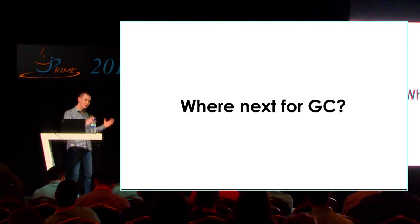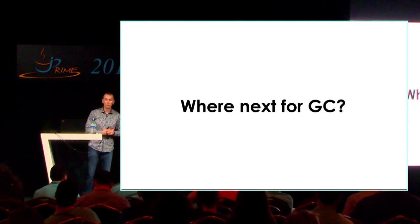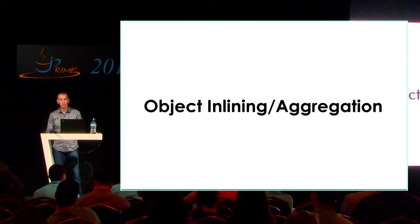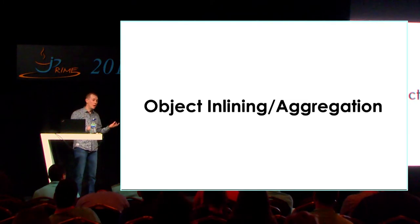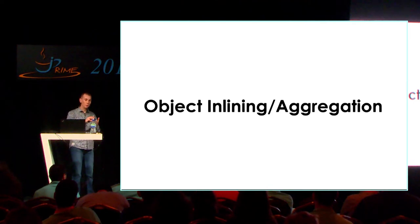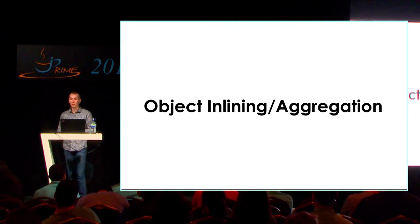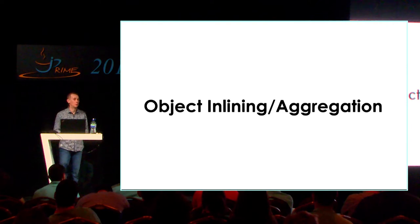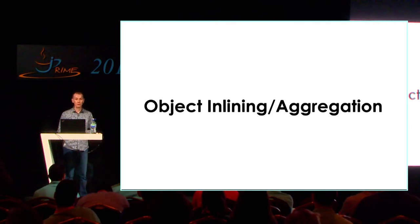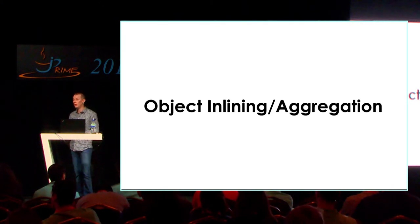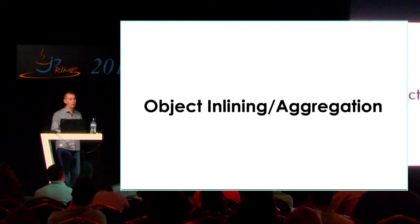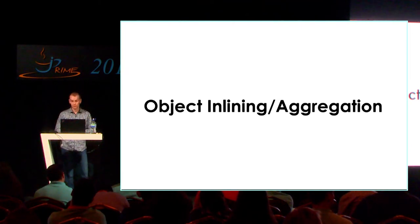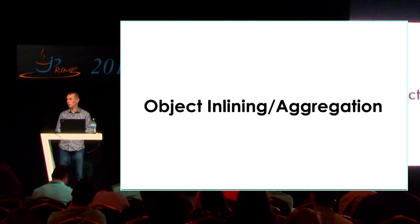That's the boring stuff we've been doing since Smalltalk days. What's current experimental research? One really interesting area is the ability to inline or aggregate objects together. If a person has a favorite color, date of birth, and other fields — what if we grouped those objects together with known predictable offsets and moved them as a chunk? That could give much better performance. We're getting experimental VM features for this. In C, C++, or C Sharp we already have the ability to specify layout and control this much better. Java is lacking a bit in this area.